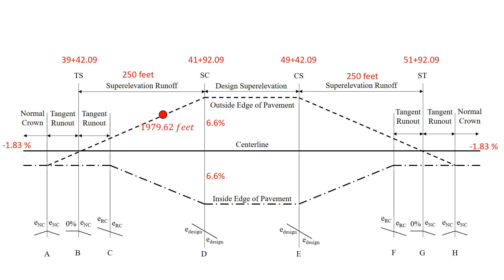At station 41, the outside edge of pavement elevation we solved is 1,979.62 feet — we started at the centerline and moved outward. At station 51 plus 50, solving for the tangent runout was critical: being within that runout means the inside edge cross slope is simply the normal crown of 2%, simplifying the calculation to give 1,959.67 feet. If we were instead asked for the outside edge of pavement at that same location, it would not be 2% — we'd need to solve it similarly to how we did for station 41.